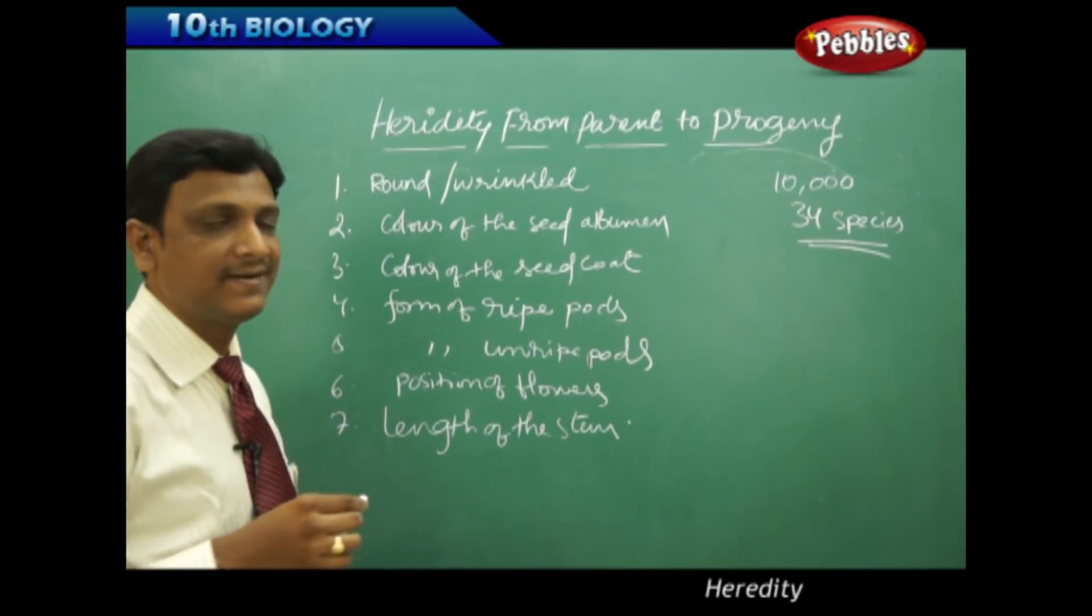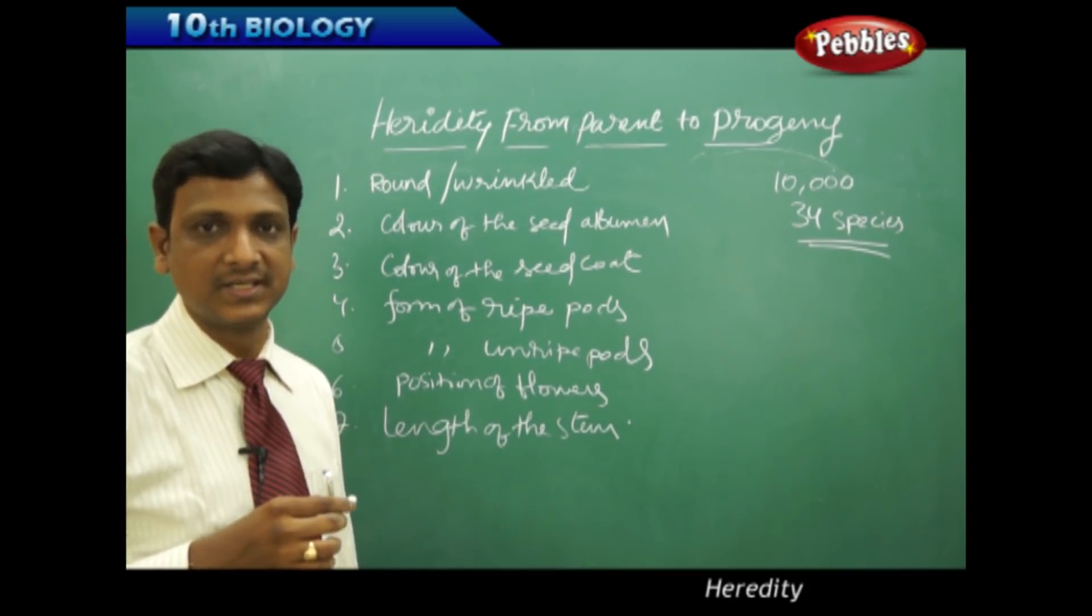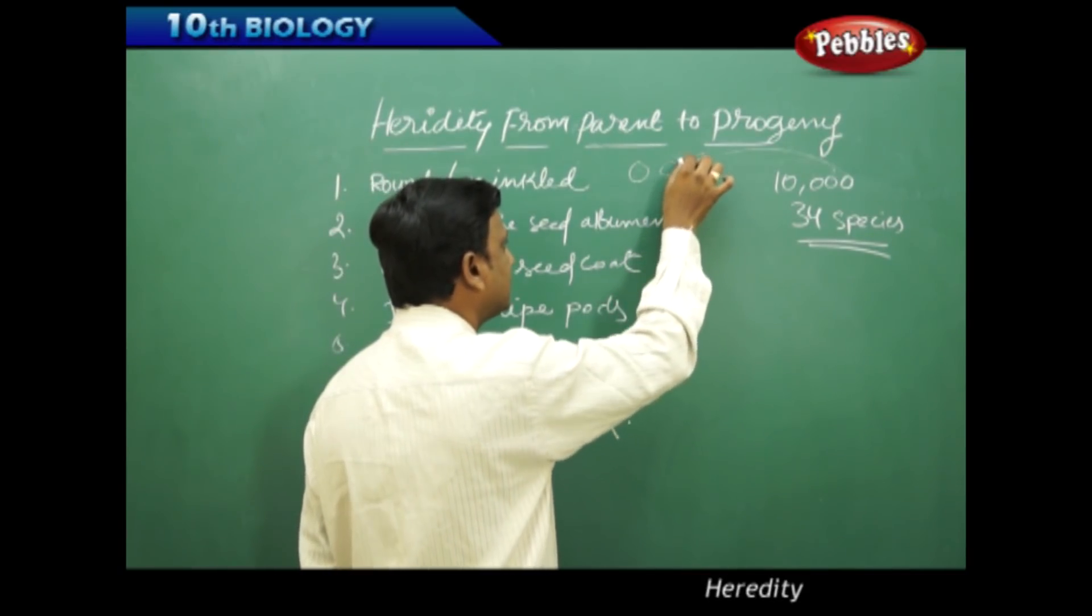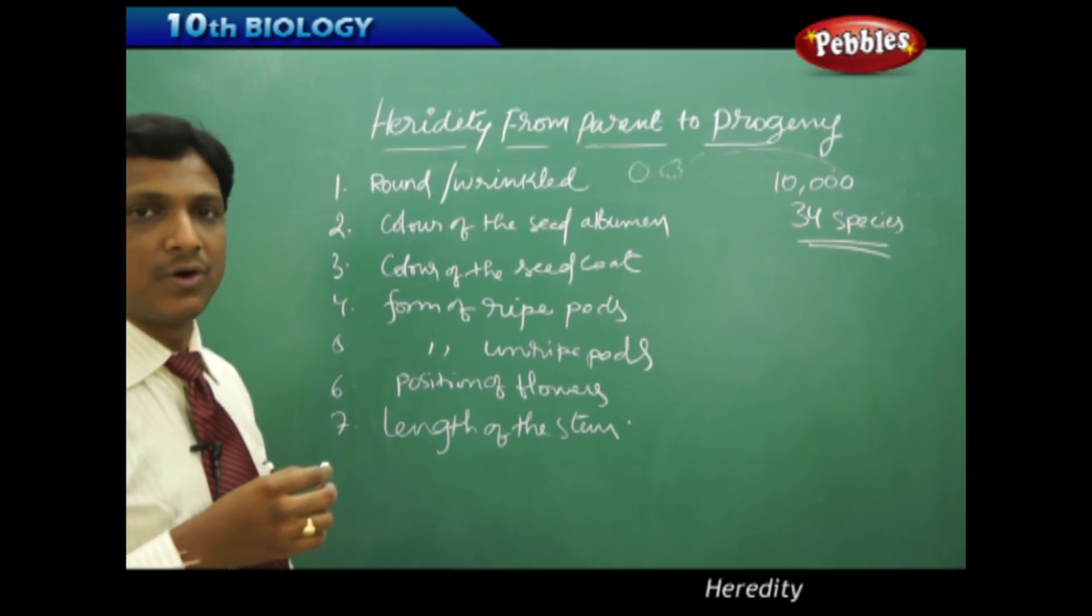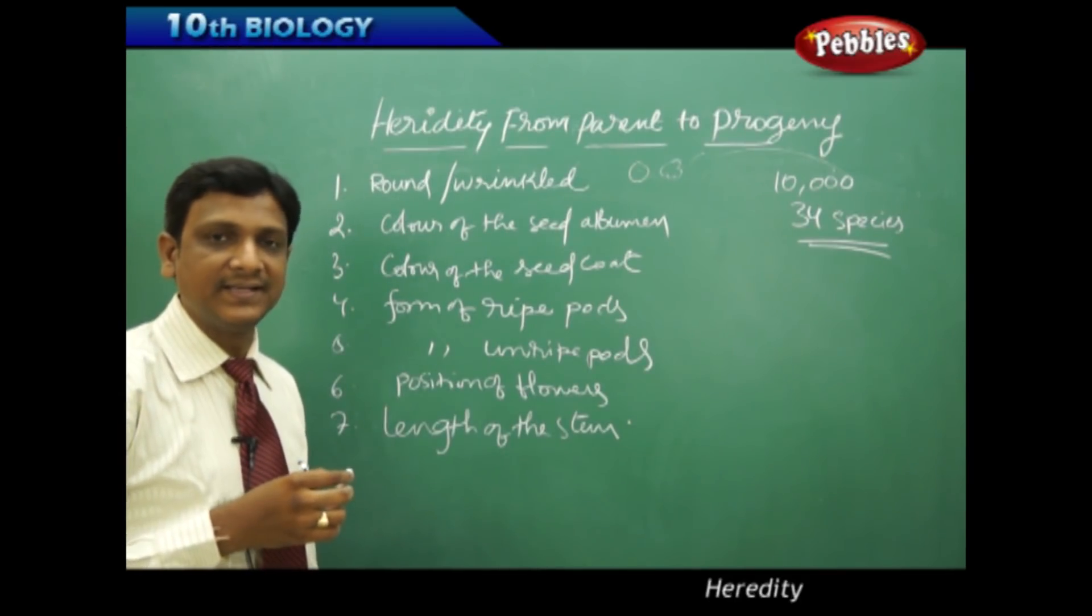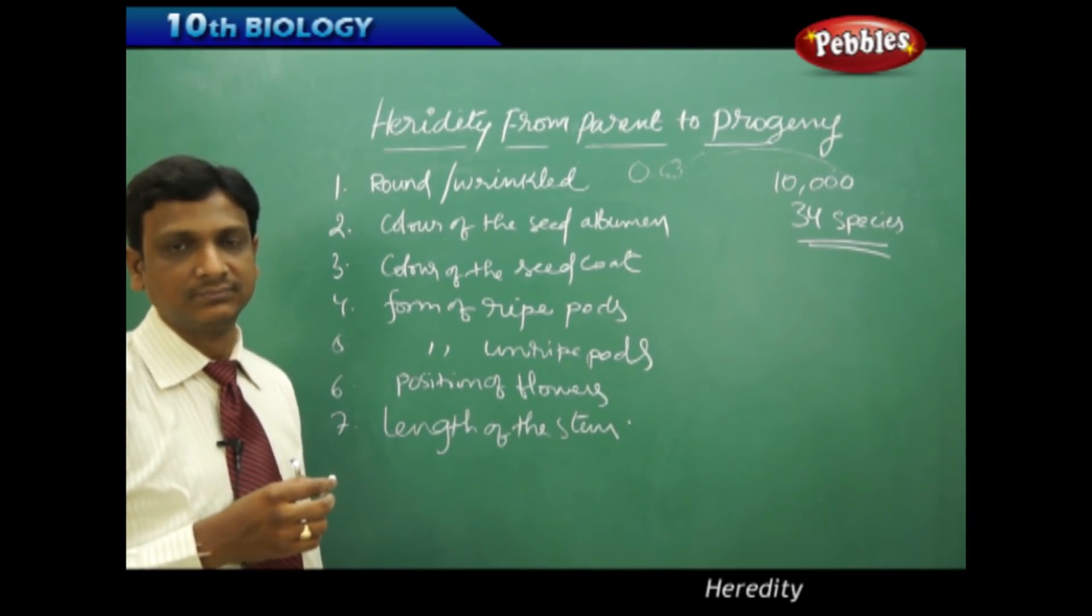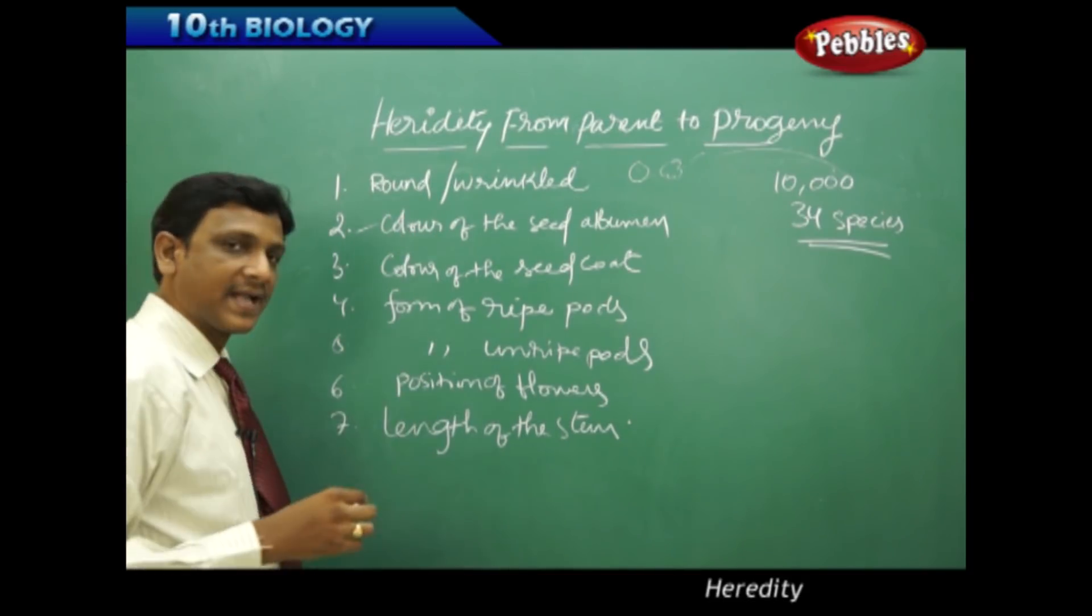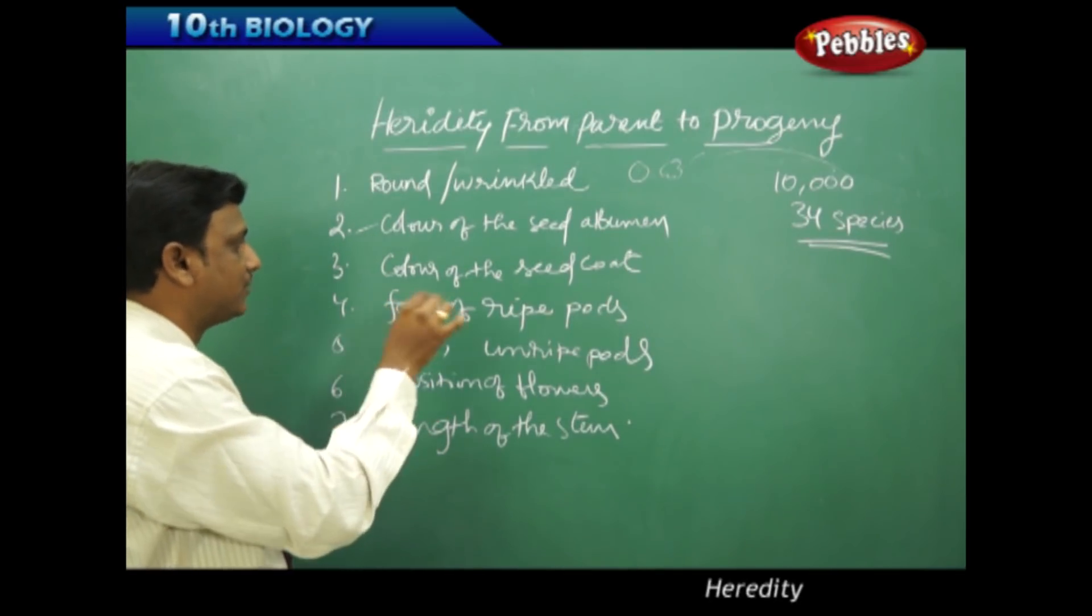The first thing: whether the seed is round or deeply wrinkled. Some pea plant seeds are round, some are deeply wrinkled. And color of the seed albumen, cotyledon - whether it is pale yellow, bright yellow, or orange color. There are three variations. That is the second contrast character: the color of the albumen, the seed endosperm.